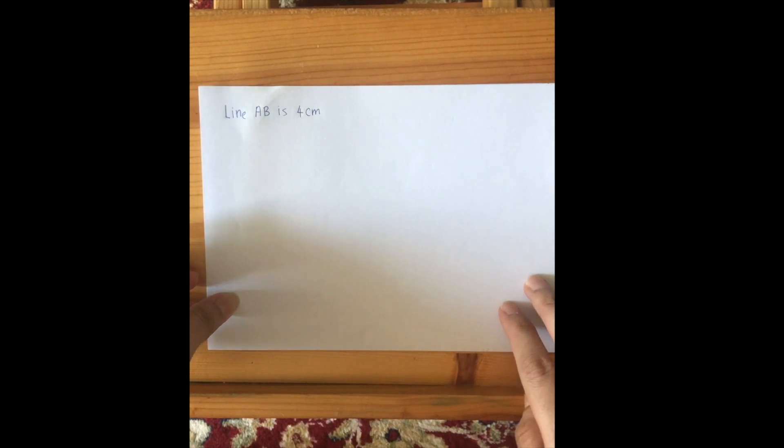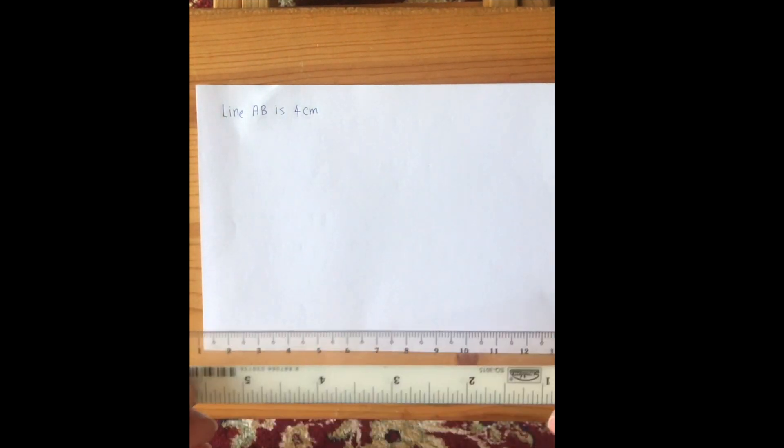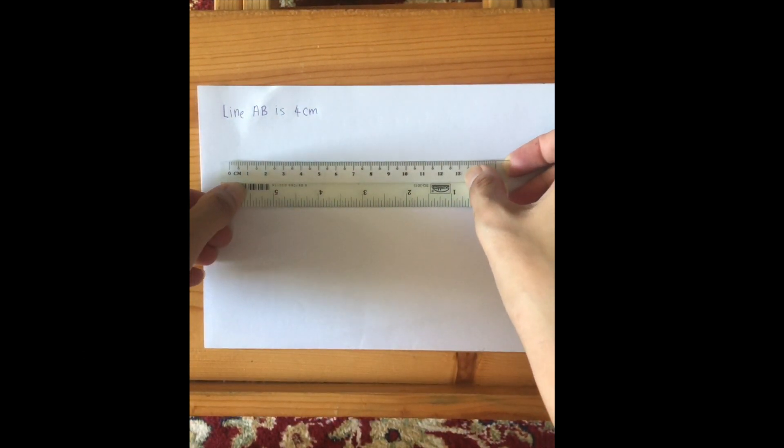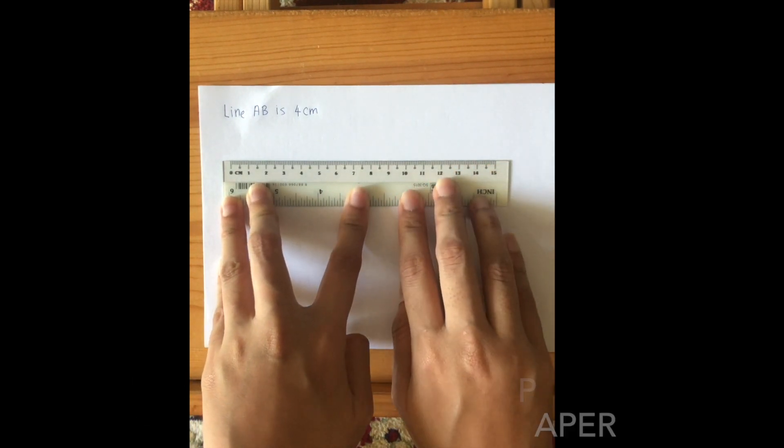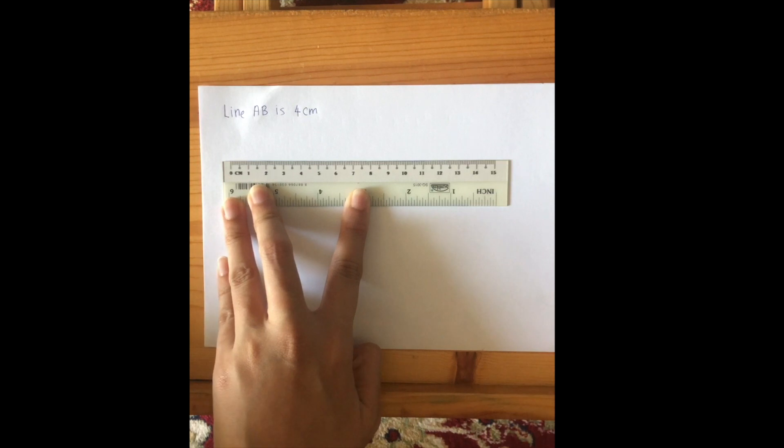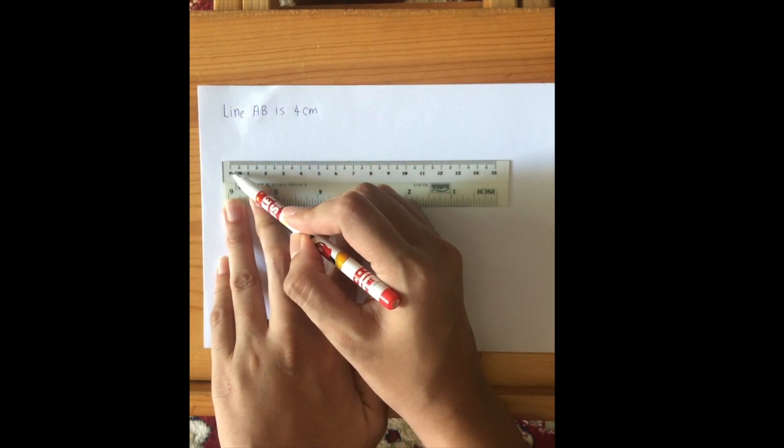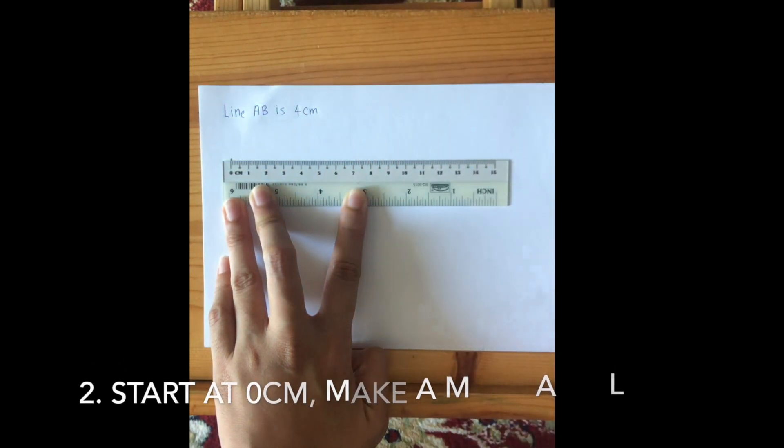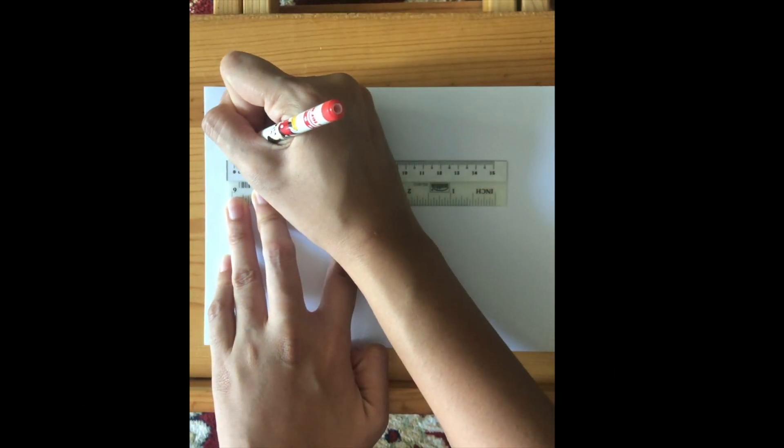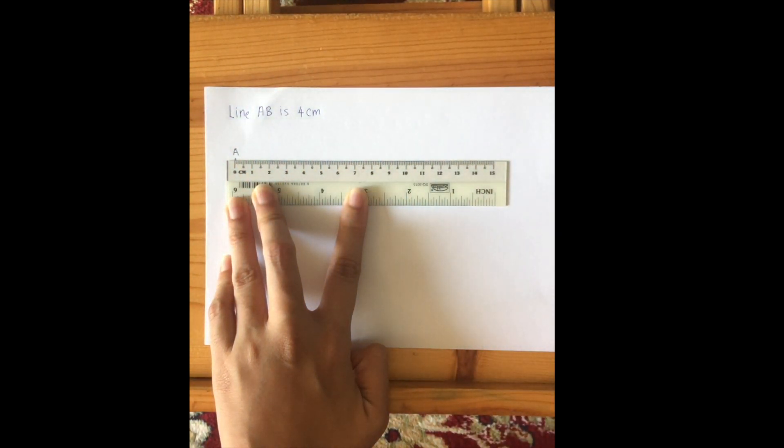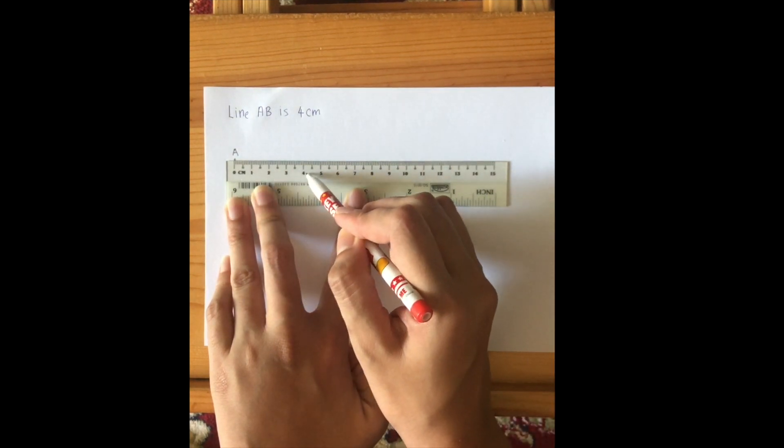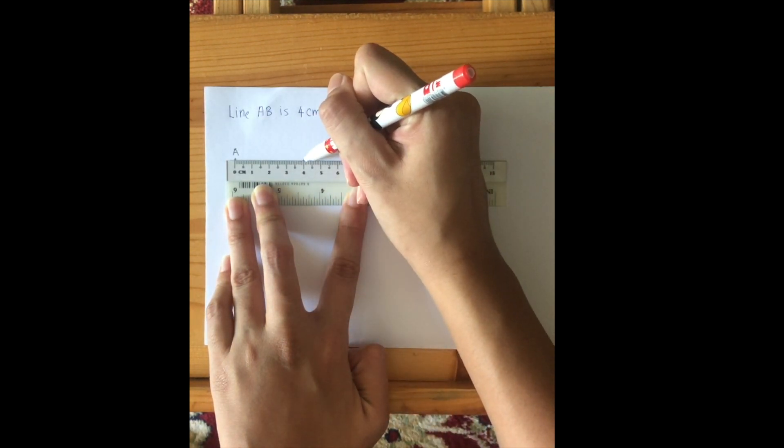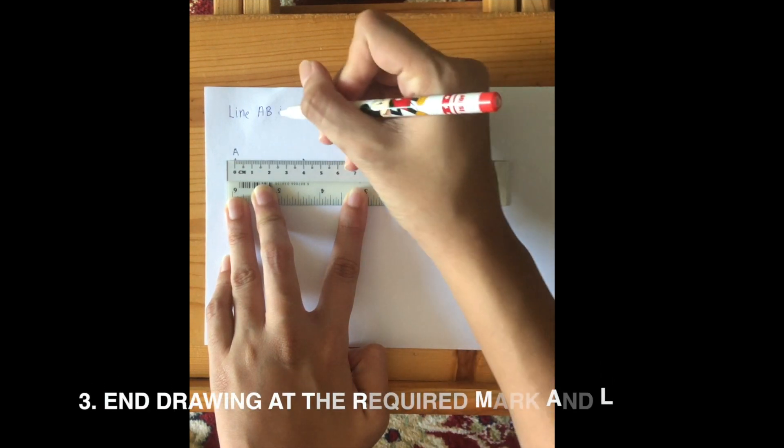First I'm going to draw a line AB that is four centimeters. So first I take my ruler and I place it firmly on the piece of paper. Do not let the ruler move. Next I look for the zero centimeter on the marker. In this case this is zero, and I make a mark on top. I can just draw a dot. Once I've made a mark I write down A, I label it A. Now because we know line AB is four centimeters, I take a look at number four because it ends here, so above the number four I draw another mark and I label it B.